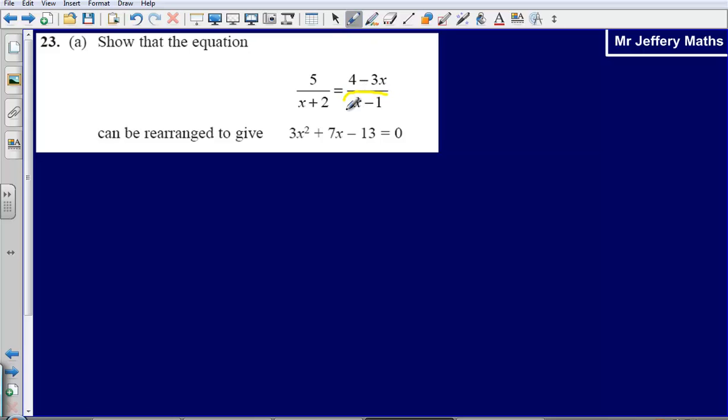So the first thing I'm going to do is take this x minus 1 and multiply both sides by x minus 1 to get rid of the fraction. That's going to give me 5 bracket x minus 1.